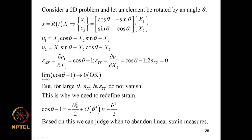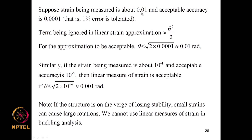To examine this in greater detail: cosθ − 1 ≈ −θ²/2 + O(θ⁴). Based on this we can judge when to abandon linear strain measures. If the strain being measured is about 0.01 and acceptable accuracy is 1%, the term ignored in linear approximation is of order θ²/2. For this approximation to be acceptable, θ must be less than about 0.01 radians. Similarly if strain is ~10⁻⁴ with 1% accuracy, linear strain is acceptable only if θ < 0.001 radians.